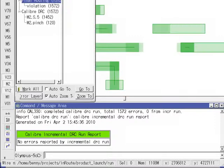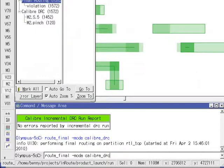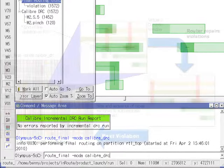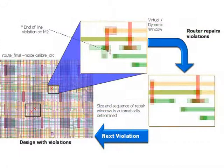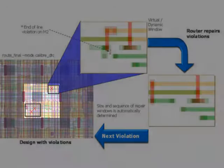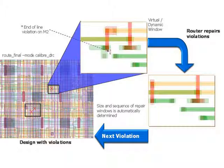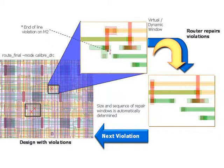Now we are ready to run the same repair process for all found violations. When a window is modified, it is being instantly checked by the built-in Calibre DRC and will only be saved back to the layout if it is completely clean. Therefore, the process is essentially correct by construction.